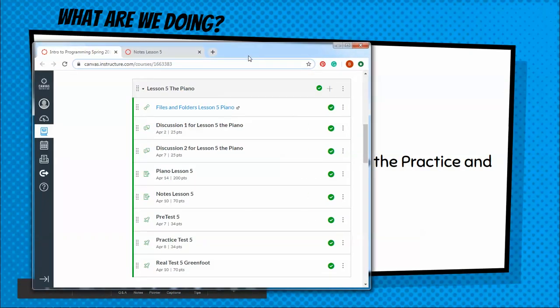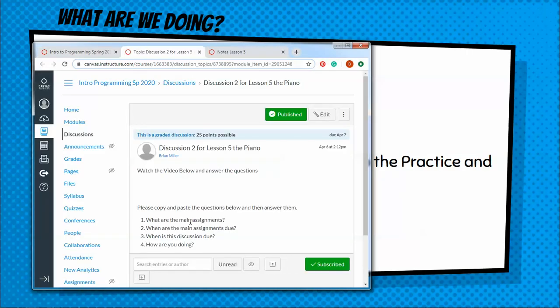Okay, so if you go into Canvas, it's going to be right here, Discussion 2 for the Piano. And it's going to be real similar to the last time. What is the main assignment? Well, the main assignment is to do the pre-practice and real test, as well as turn in the notes.